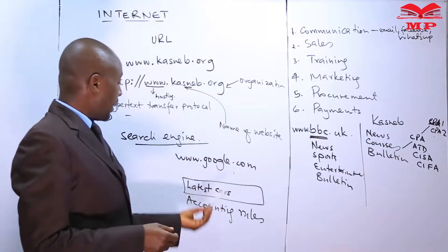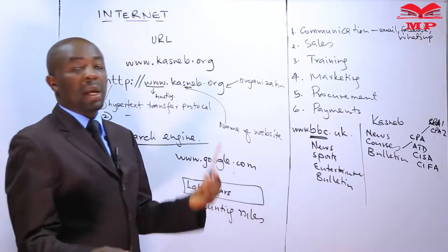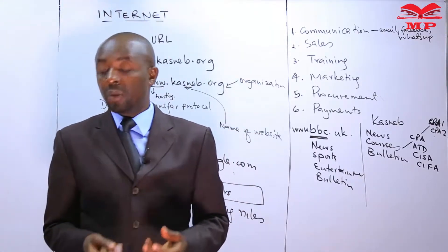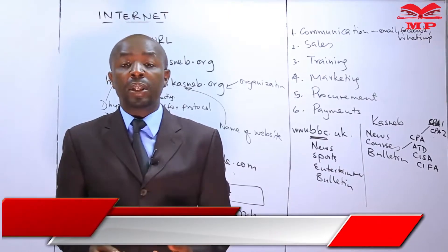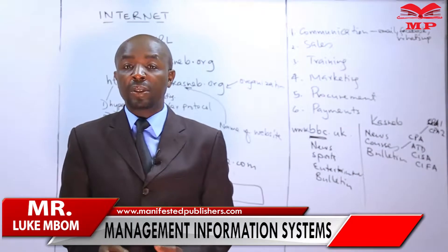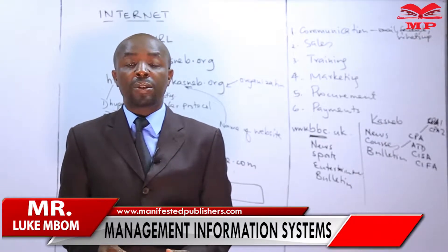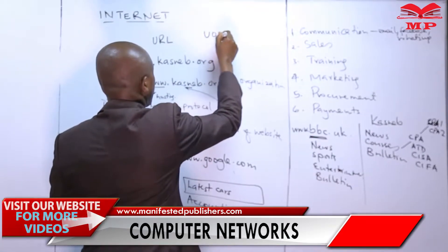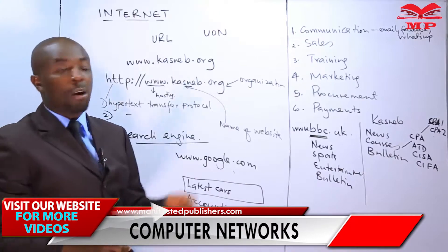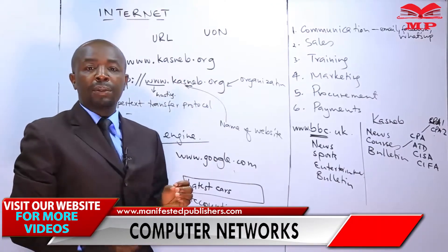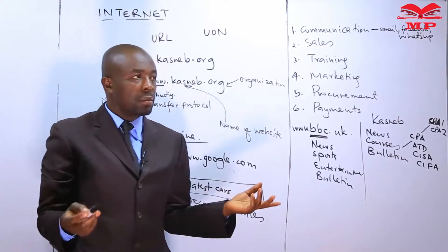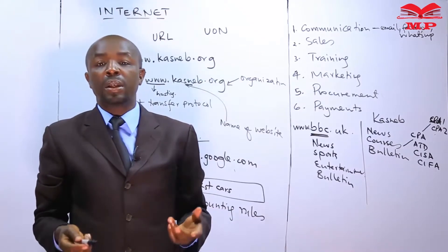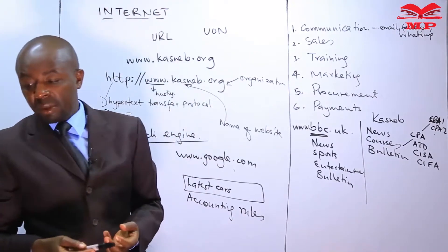The search engine is supposed to help us look for information, because we are not robots meant to remember URLs. The current web browsers — the latest versions of Google Chrome, Mozilla Firefox, and others — have automated search engines. You just type the name of the organization you want. If I want information about UON, I type 'UON' and it opens many links. If I want information about CASNEP, I type 'CASNEP' and it gives me many links.